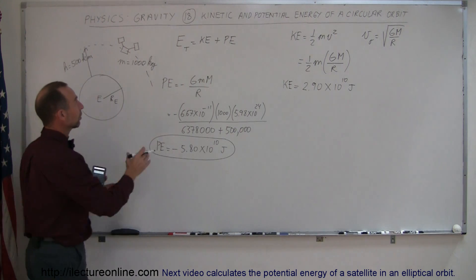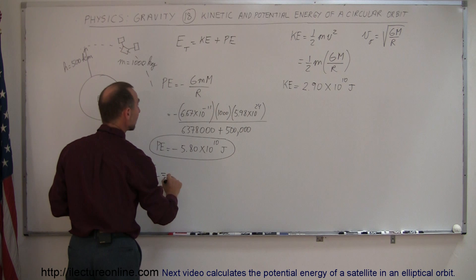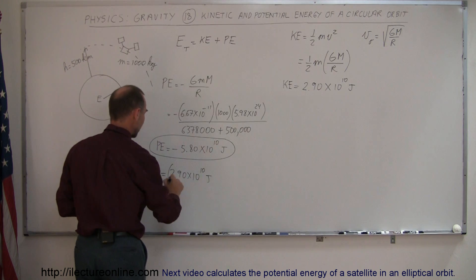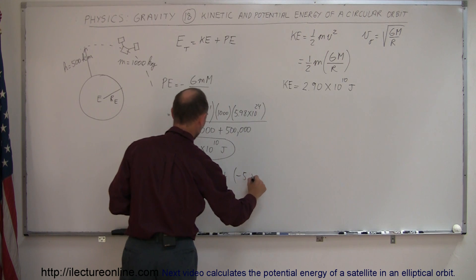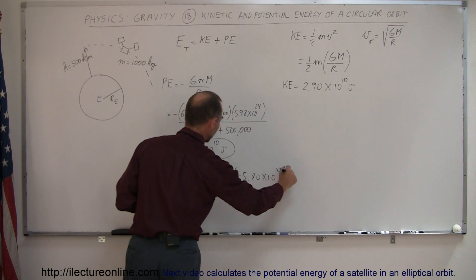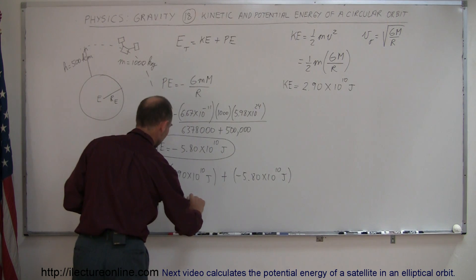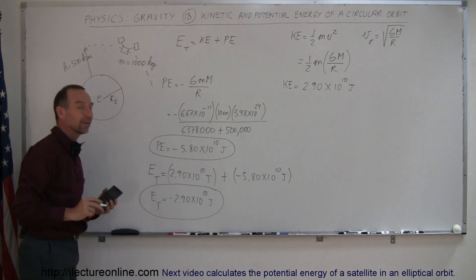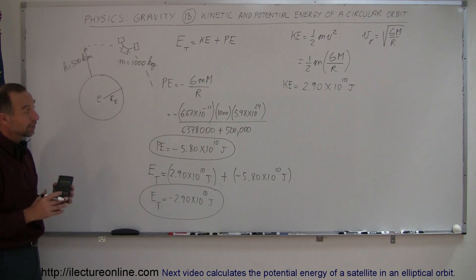Now combining the two, because we have energy total is kinetic energy plus potential energy, so energy total is going to be equal to the kinetic energy, which is 2.90 times 10 to the 10th joules, and then we're going to add to that the negative minus 5.80 times 10 to the 10th joules. And notice that the total energy of the satellite is going to be minus 2.90 times 10 to the 10th joules. And there you go. That is the total energy of a satellite by adding the kinetic energy and the potential energy together when it's in orbit around the Earth. Pretty interesting results.